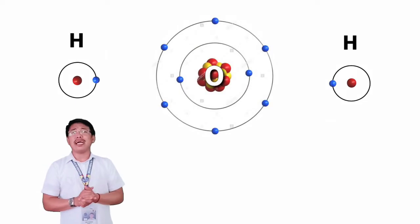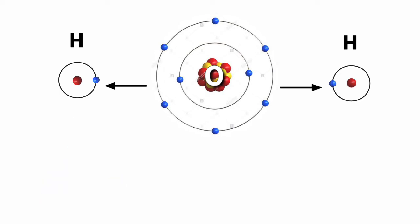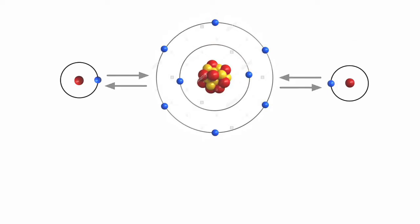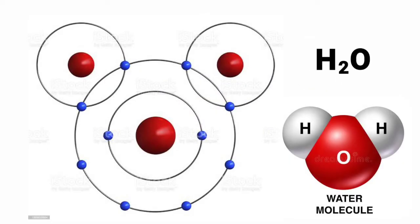Now, since they both need electrons to become stable, they will share electrons with each other. Oxygen will share its electron to hydrogen and hydrogen to oxygen, forming a water molecule. Oxygen now has eight electrons and hydrogen has two, making each atom stable.